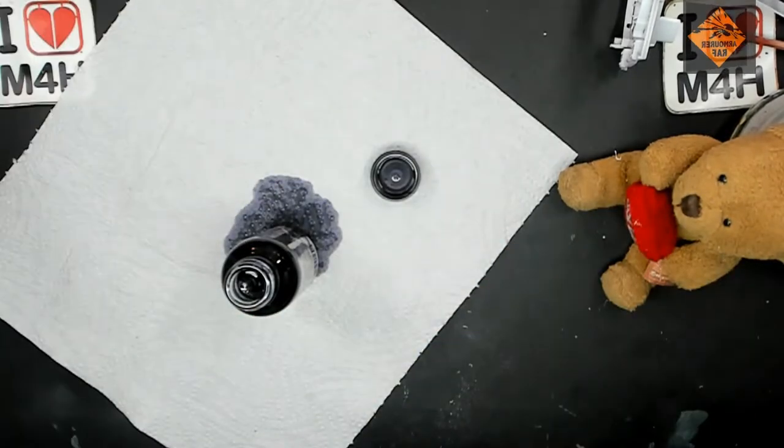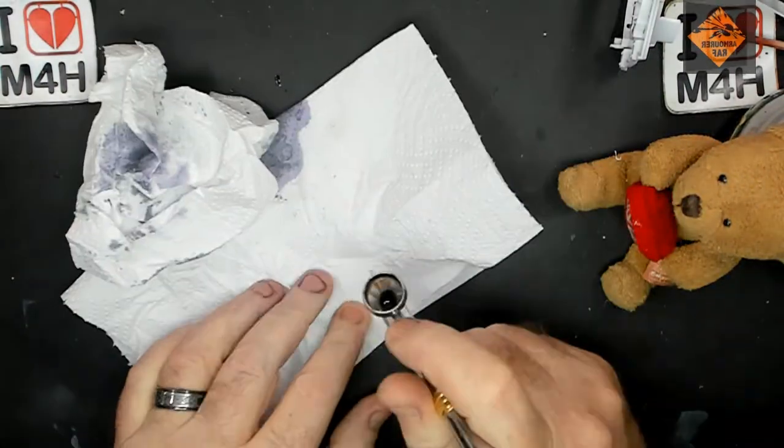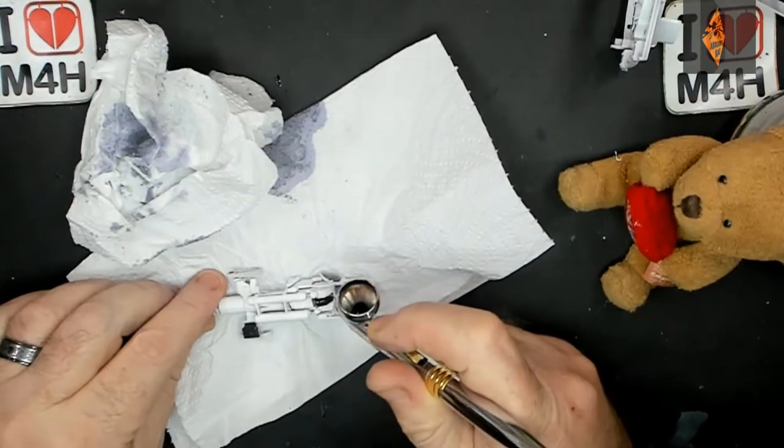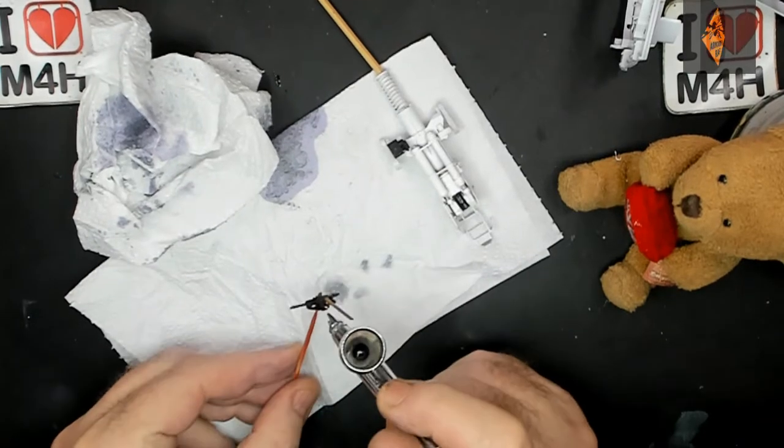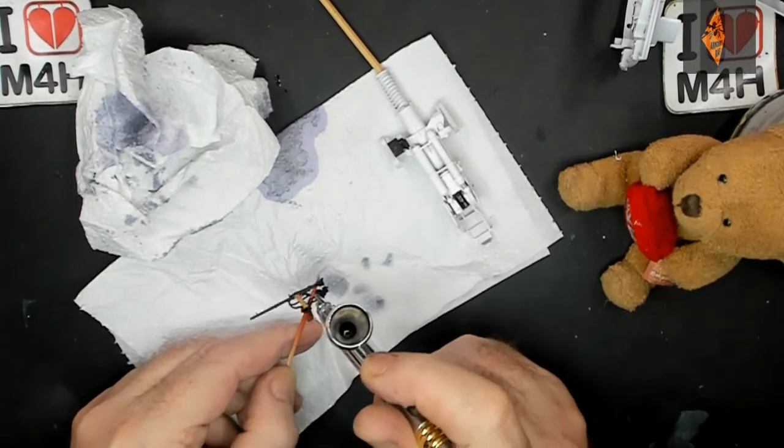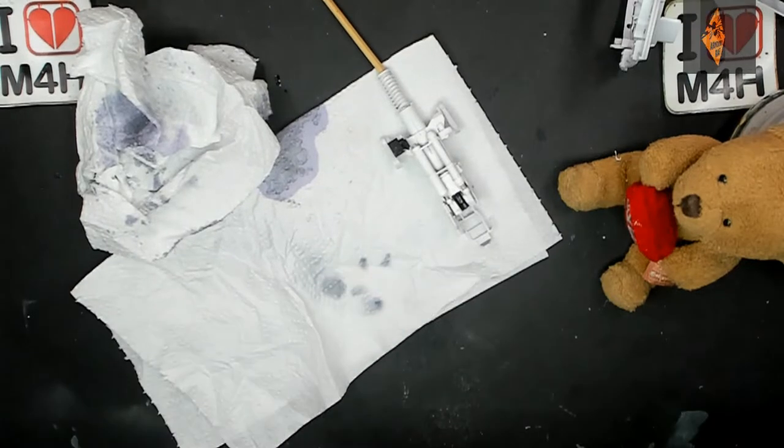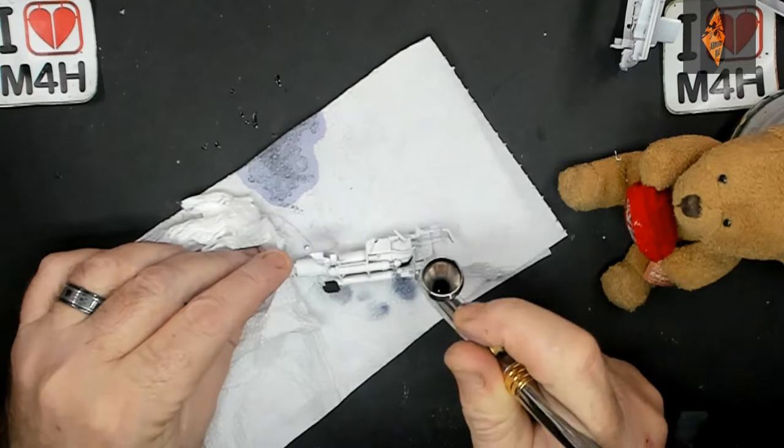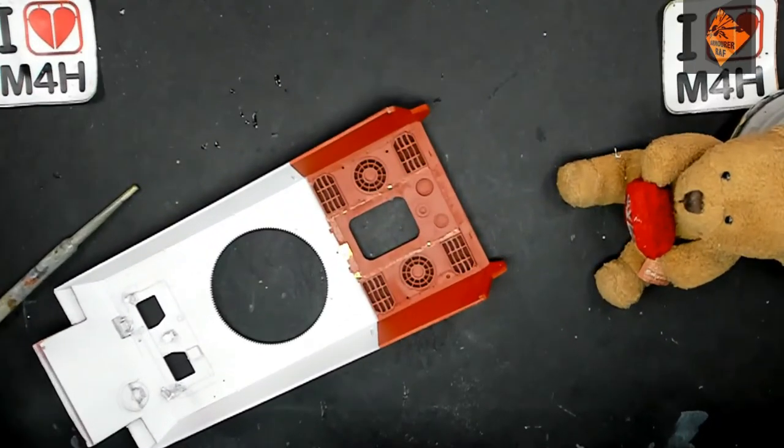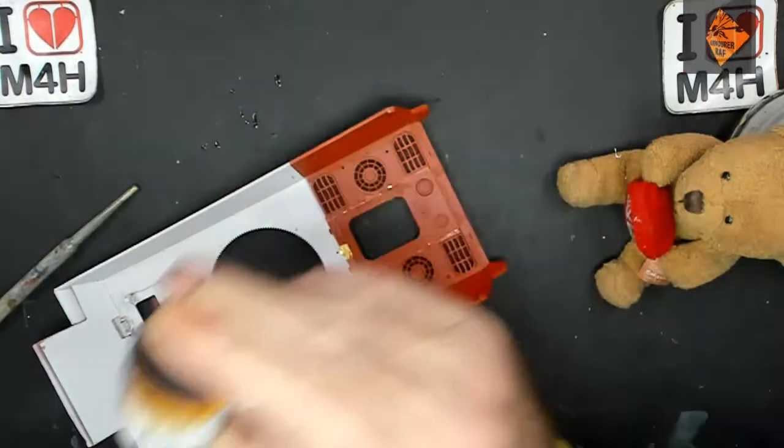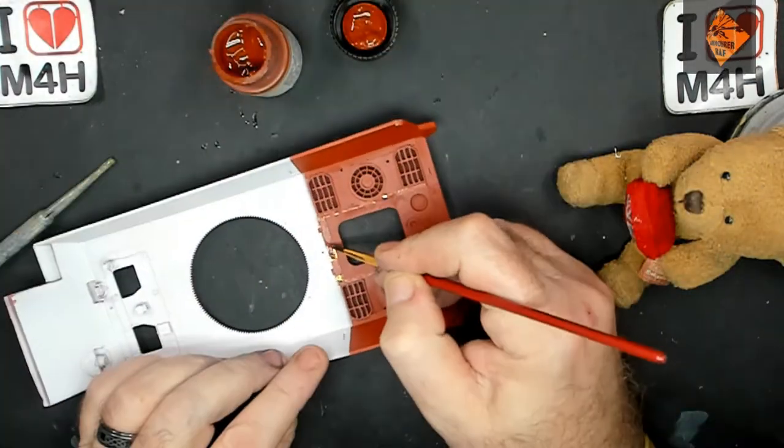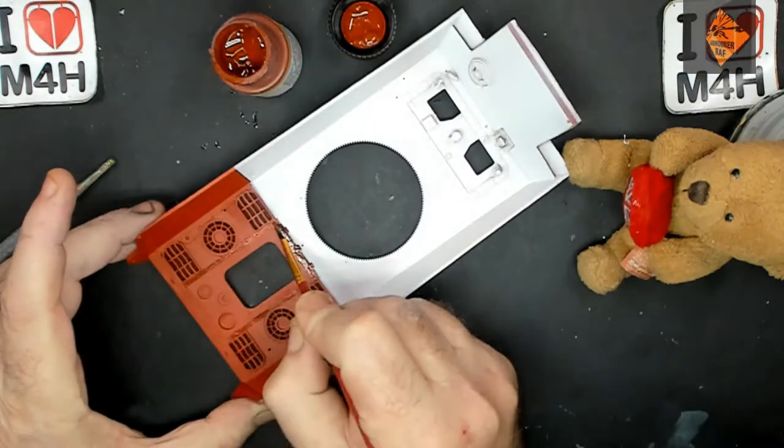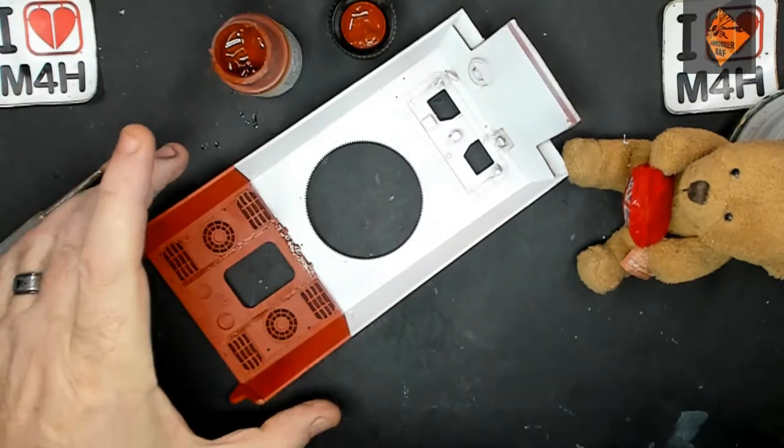Bugger! Spillage! Okay, pop that to one side. Now we just need to clean up the metal parts. Rather than spray, I'm just using Lifecolour's UA231 German Oxide Red. Bit of hairy sticking here. There we go. That's the hairy sticking done.